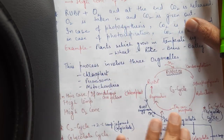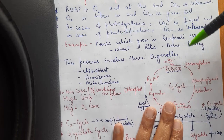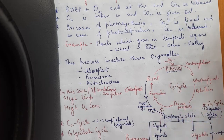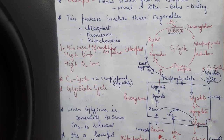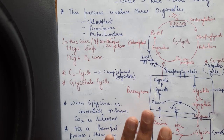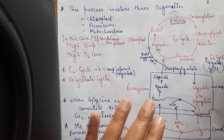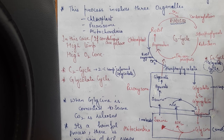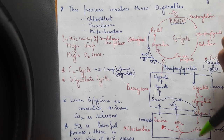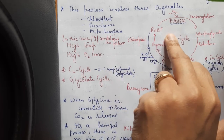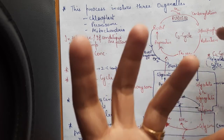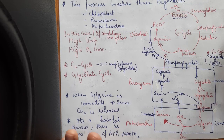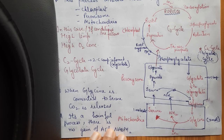The plants in which photorespiration occurs are basically those that grow in temperate regions — for example, wheat, rice, beans, barley, and so on. Photorespiration is a wasteful process; it should not happen in a plant because it causes wastage. It occurs under high temperature and high oxygen concentration. This process involves three organelles: chloroplast, peroxisome, and mitochondria.